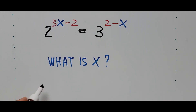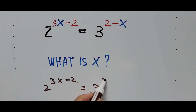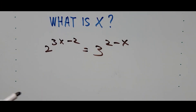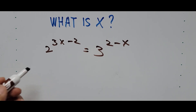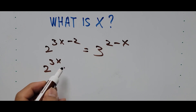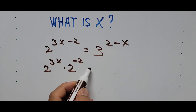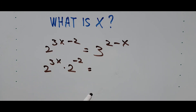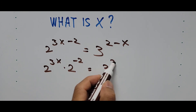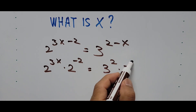We have 2 raised to 3x minus 2 equals 3 raised to 2 minus x. The left side can be written as 2 raised to 3x times 2 raised to negative 2, and the right side is 3 raised to 2 times 3 raised to negative x.